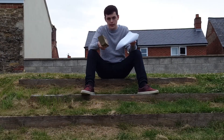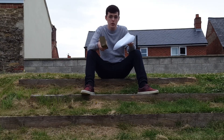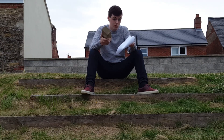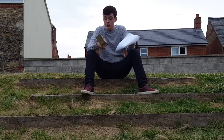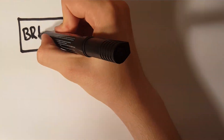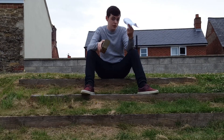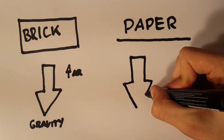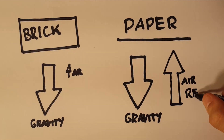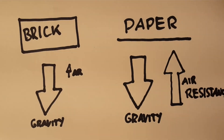Wait a minute — what about paper? Feathers? Things like that. They obviously don't fall at the same rate as heavy bricks. What gives? Earlier I said the only force acting on a free-falling object that isn't negligible is gravity — but this is only true for objects like this brick, which has a low surface area to mass ratio. For objects like this paper, which has a much higher surface area to mass ratio, air resistance comes into play, which is a force that acts in the opposite direction to gravity.